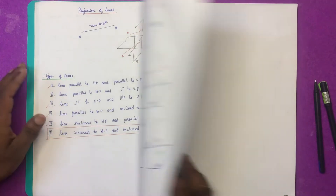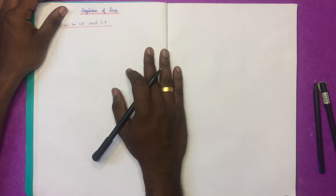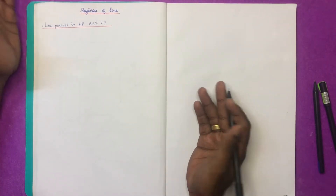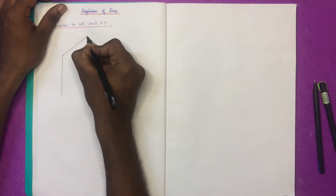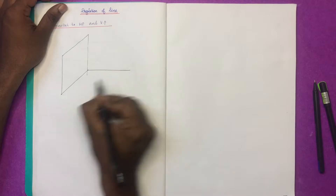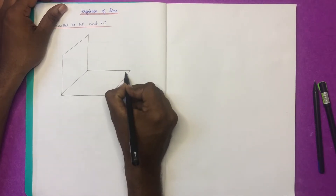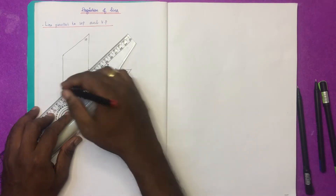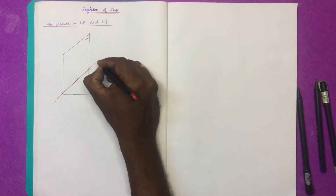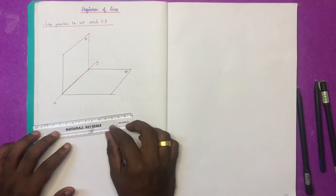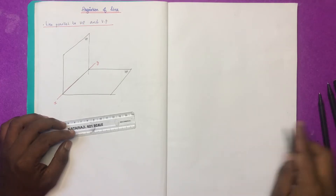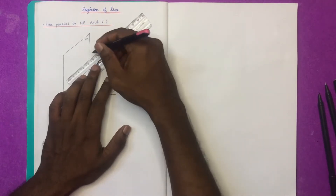The projection of lines parallel to both HP and VP. First of all, the projection is in the first angle. These are the conditions. I am going to put the line in the first angle. This is HP and VP. The line is parallel to both HP and VP. In the previous video, I am going to put the line parallel to both HP and VP.